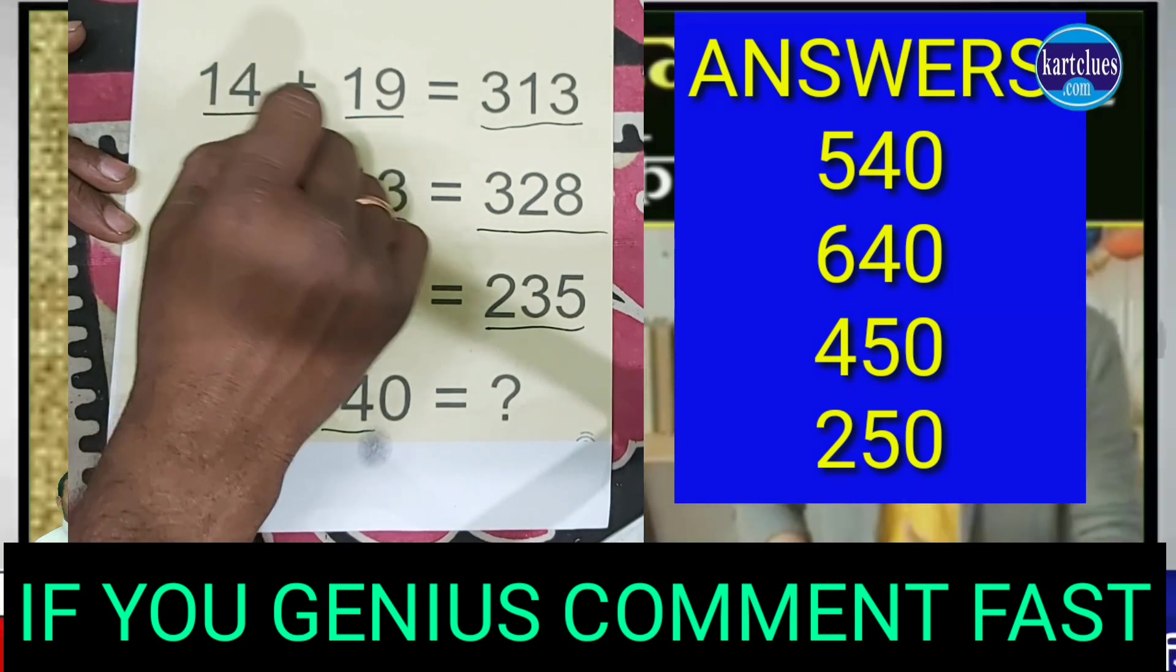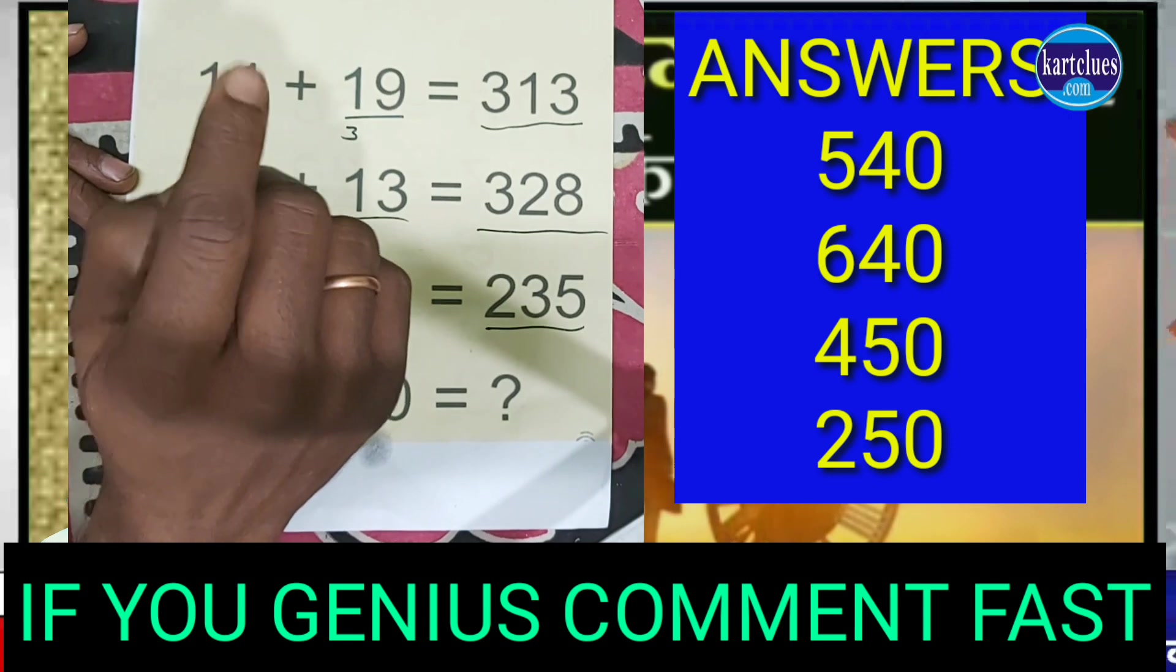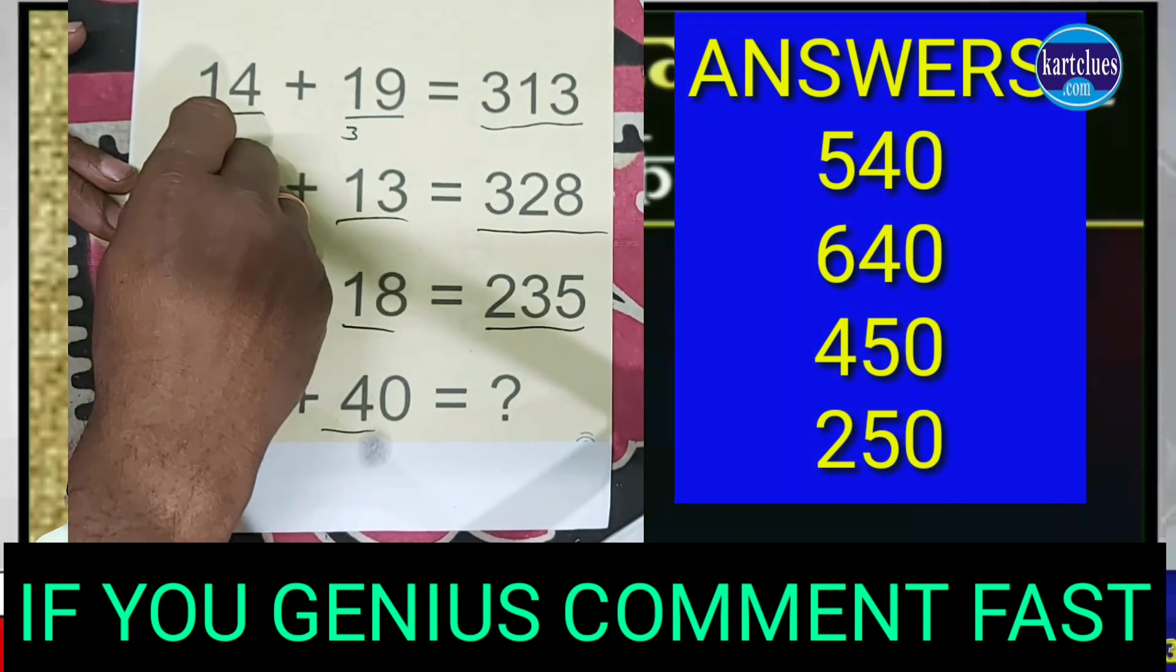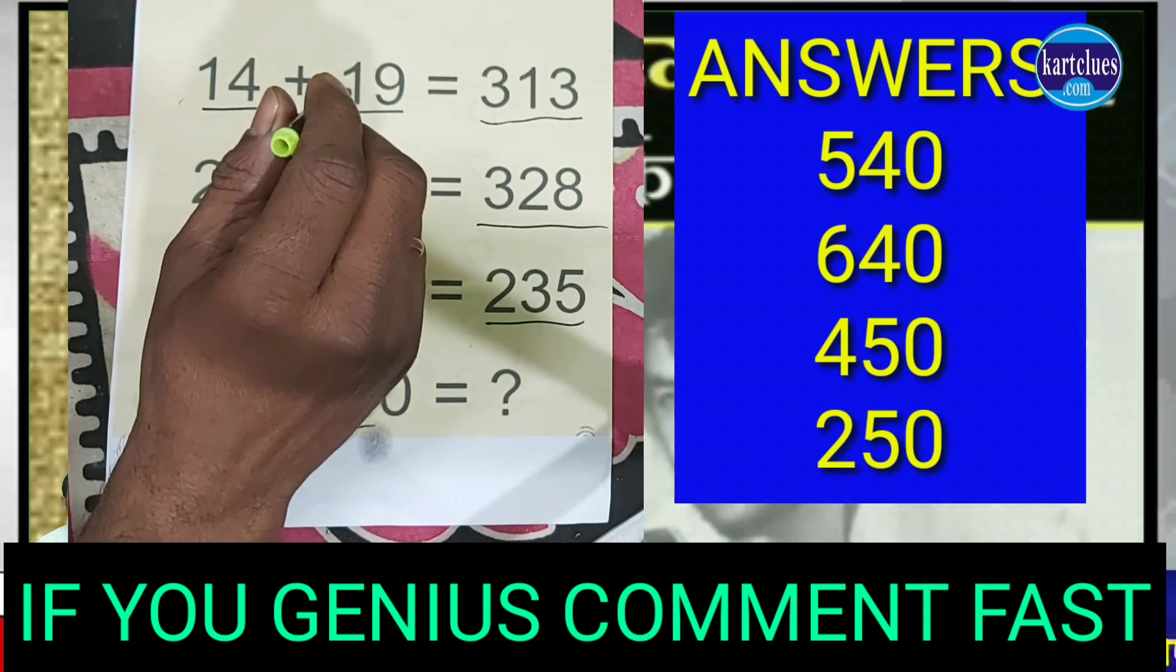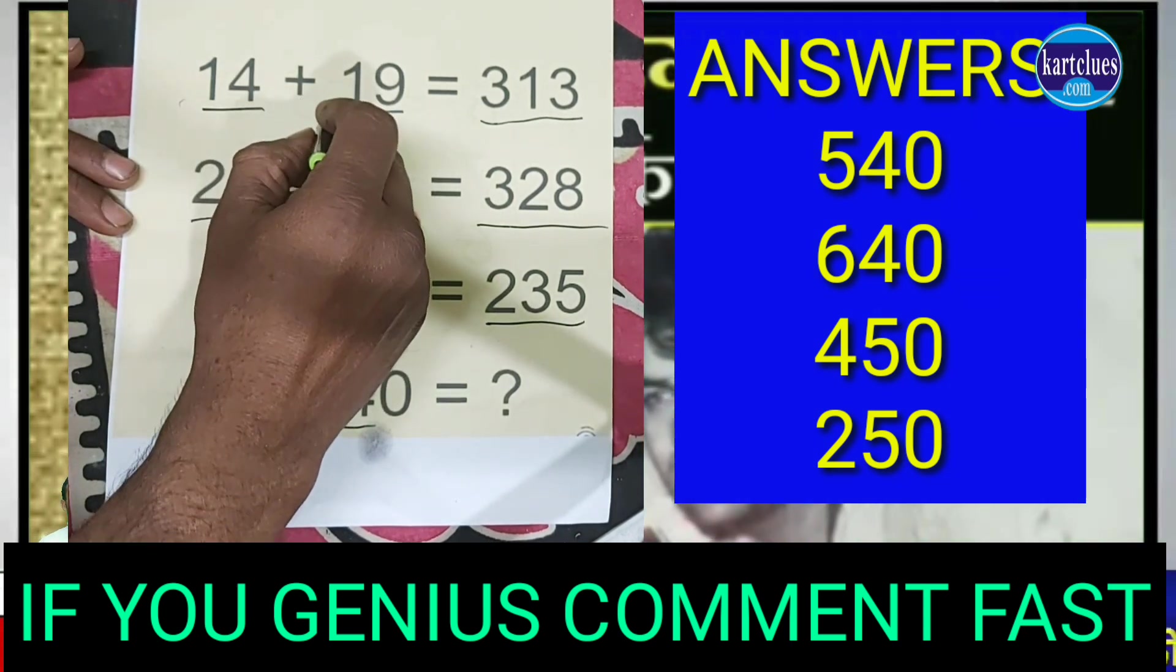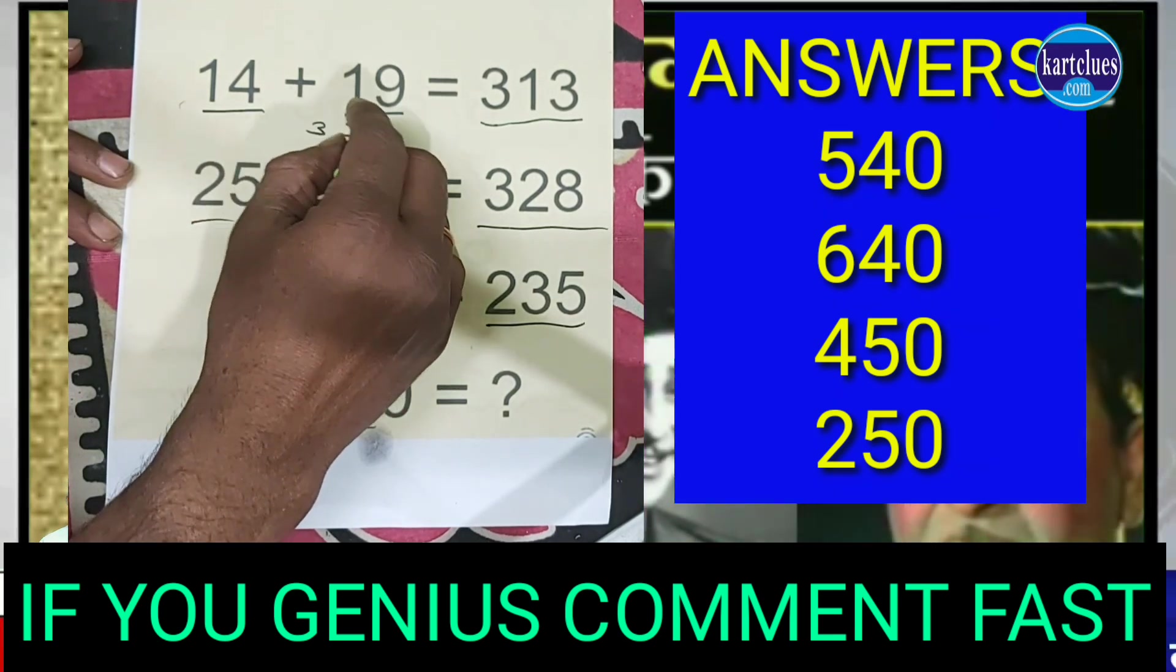- well, 14 + 19 = 33. 33 means you write 3 and 3, and in between 2 and 2, making 313. You understand? It is 33 when